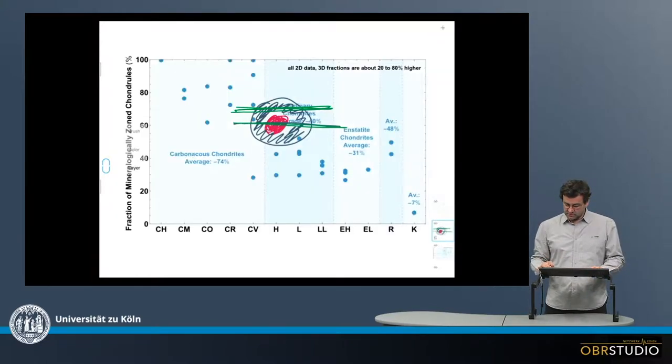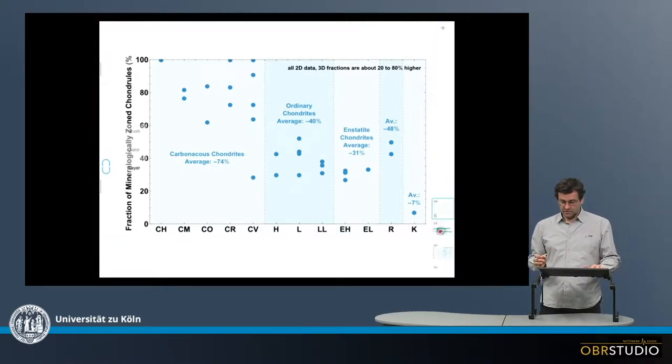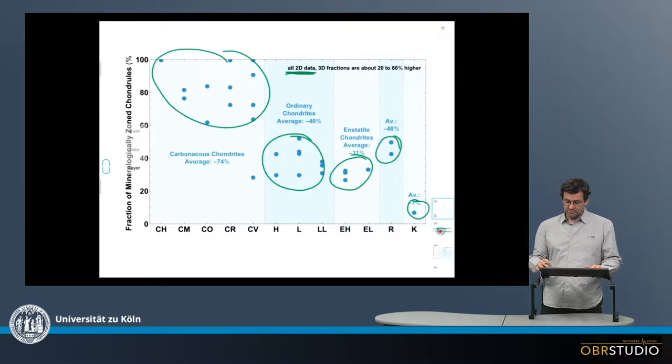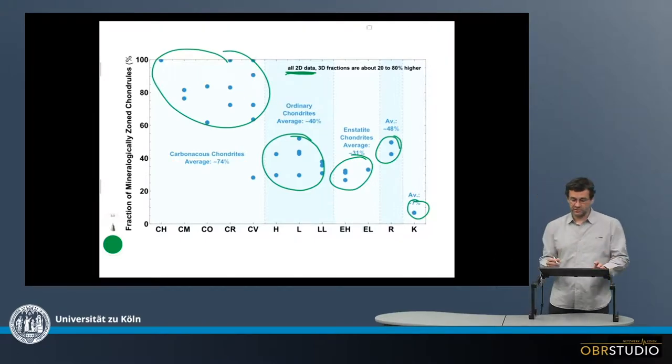It is then possible to count mineralogically zoned chondrules in 3D. When we for example take a thick section and serial section it, we will find all the zoned chondrules. And when we do this, we count the real 3D fraction.